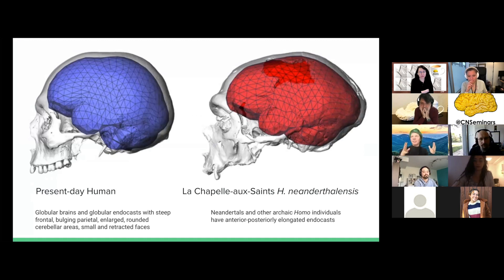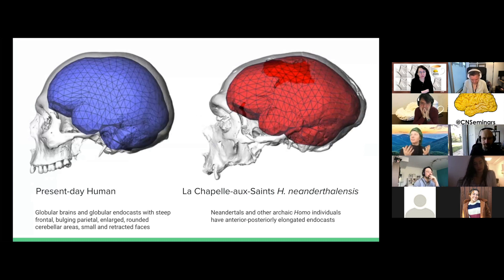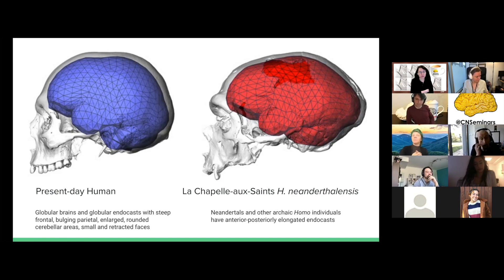In this particular paper, they're interested in understanding the globularity of the human brain. They don't really define it explicitly, but basically they mean that human brains are taller, more compressed, and more rounded than Neanderthal brains and the brains of other hominids. Even chimpanzees and other primate species have brains that are not as tall and spherical as humans. There's been interest in how this came about, why homo sapiens evolved this brain shape, and what behavioral and genetic implications it has.